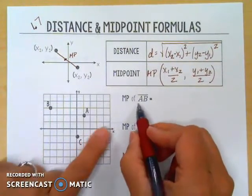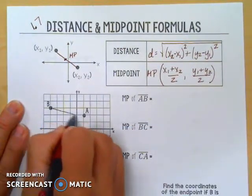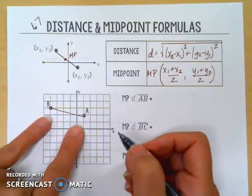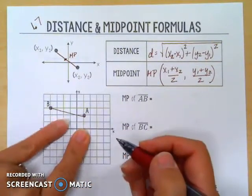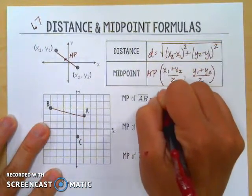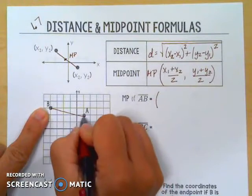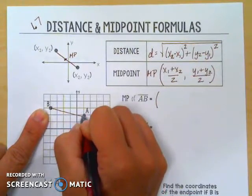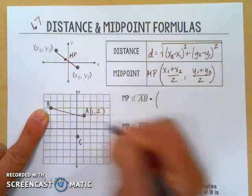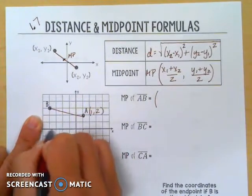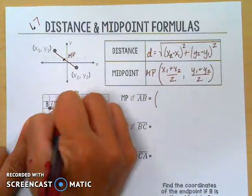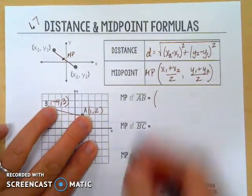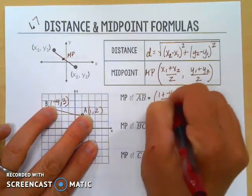Let's do a couple of these. We want to find the midpoint of AB — here's my segment AB. Because it's on this grid I can use my formula. I need to find where these points are located first. Point A is at (1, 2) and point B is over here at (-4, 3) — 4 to the left and up 3. So if I add my x's together, that's 1 plus negative 4 divided by 2.